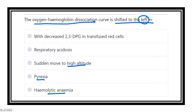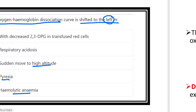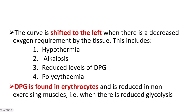For this condition, we have to look at the different conditions where the oxygen hemoglobin dissociation curve shifts. The curve shifts to the left when there is decreased oxygen requirement by the tissue. Conditions causing a left shift include hypothermia, alkalosis, reduced level of 2,3-DPG, and polycythemia.